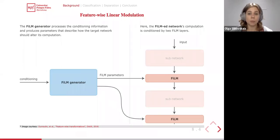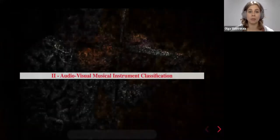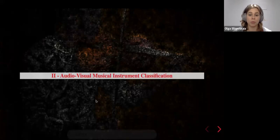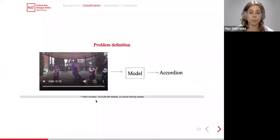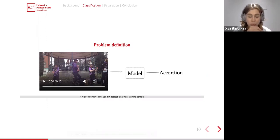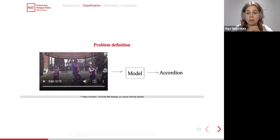Let us now move to the first task: audiovisual musical instrument classification. For the classification setup, the informal problem definition is: given a video recording that contains a musical instrument, we want a model that can identify which is the predominant instrument in the video. I will play a short excerpt — an actual training sample from one of the datasets we use.